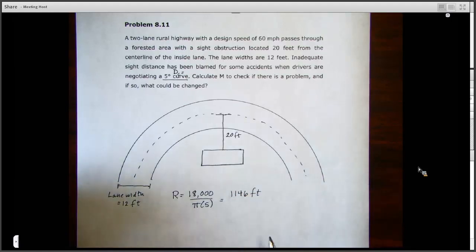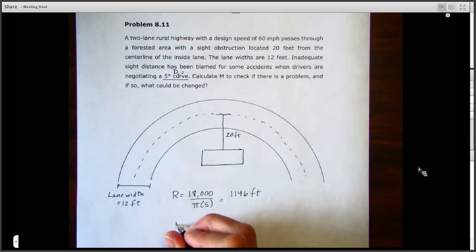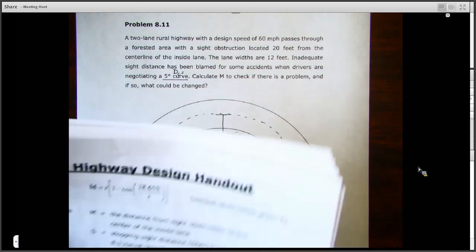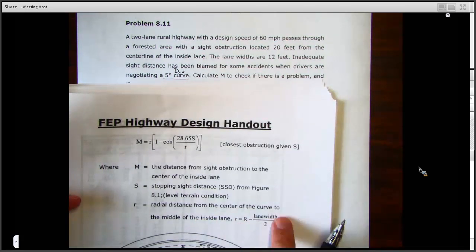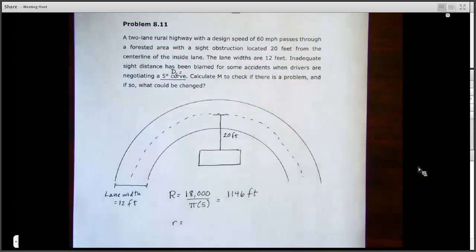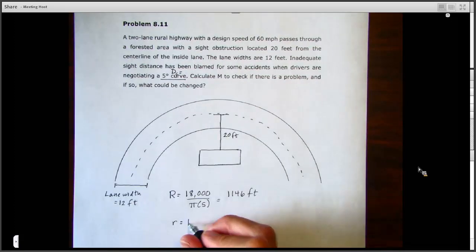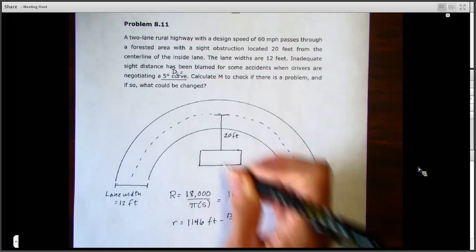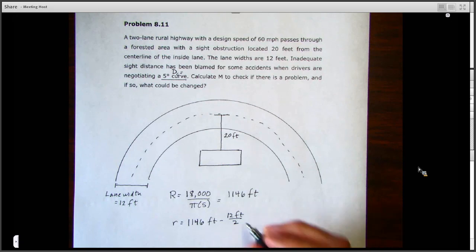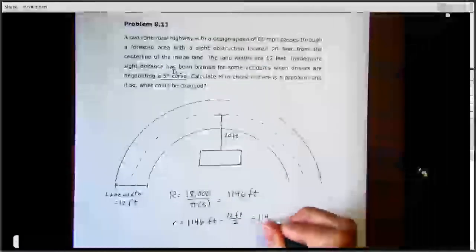So if the radius of the whole curve is 1,146 feet, that little r, which is the radial distance from the center, we can take the big R, subtract the lane width, and divide by two. In this case, it's 1146 feet minus that 12-foot lane width divided by two. So we go halfway into that six feet, and so it's just 1140 feet for this lowercase r.